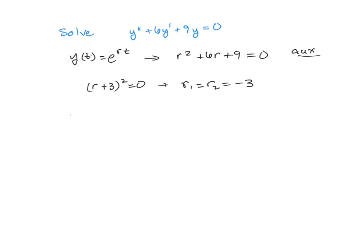So the y of t in this case is going to have an arbitrary constant c1 times e to the negative 3t, a second arbitrary constant c2, and now we have a t e to the negative 3t.